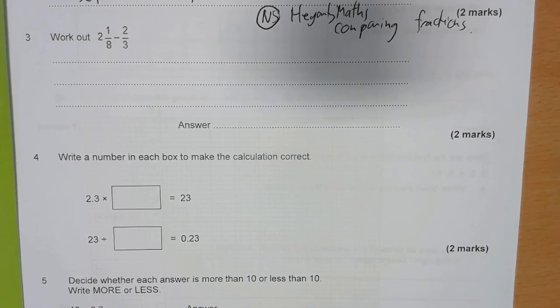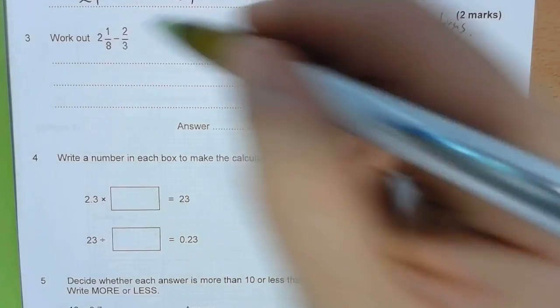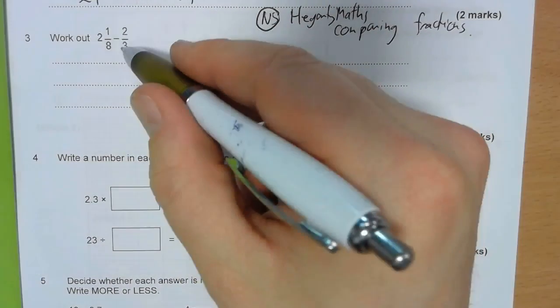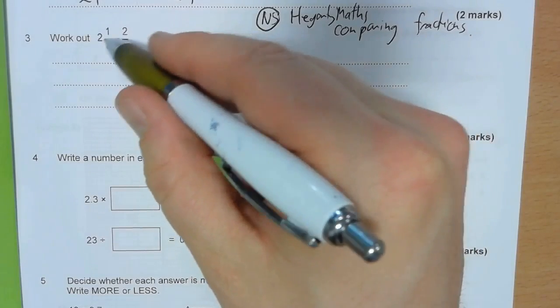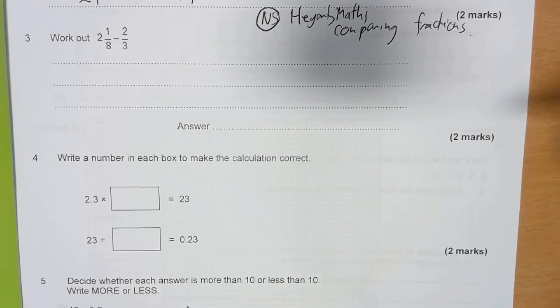Question three, work out two and one-eighth take away two-thirds. Again, similar to the first couple of questions, I need to put these both with the same denominator. And so I'm looking for common multiples of eighths and thirds, again, out of 24.